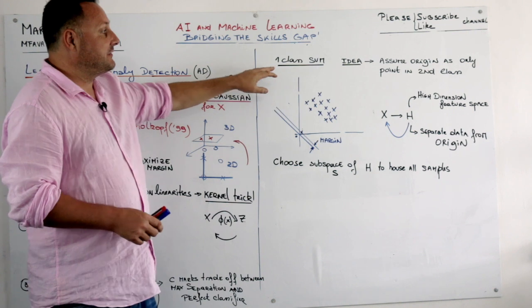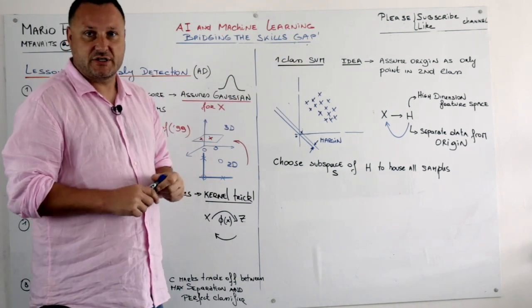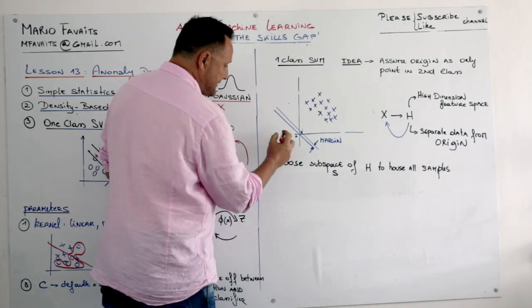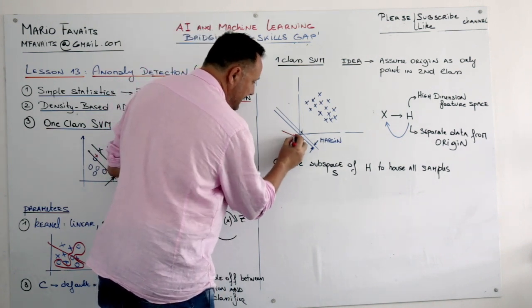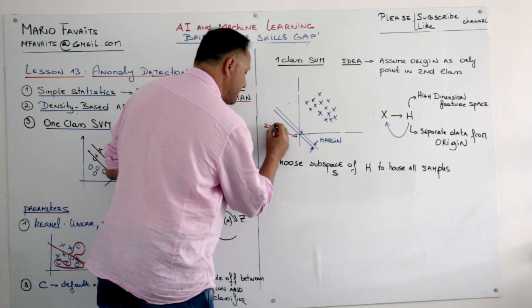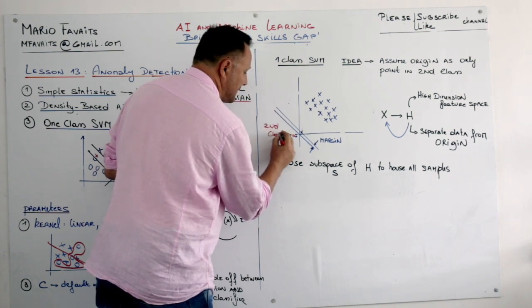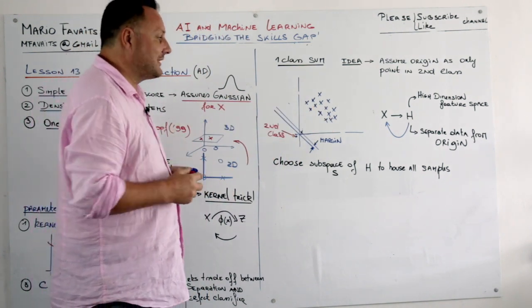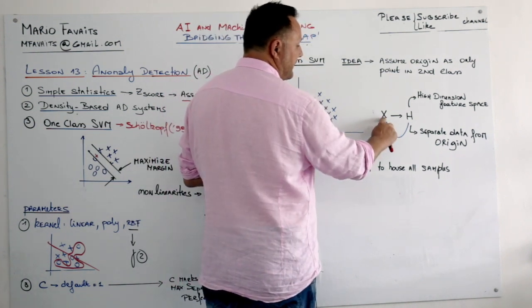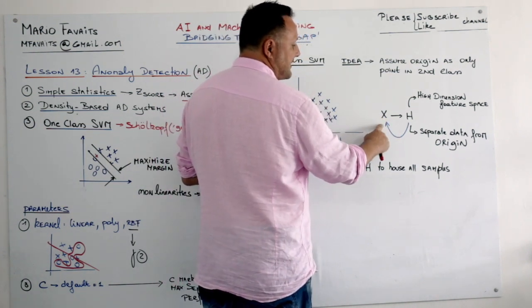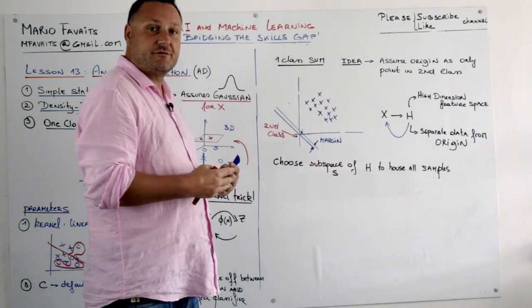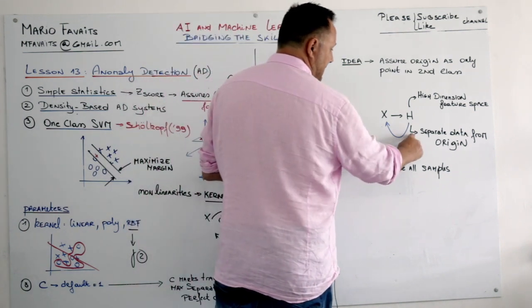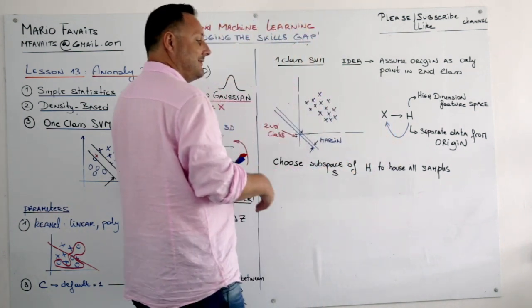Now one class SVM. Actually there is not a lot that changes. The only thing that changes is that your second class is going to be your origin. This is your second class. And all the data will be your first class. And here you do exactly the same. You take your base scenario and you project it into higher dimension feature space. You look for your support vector there. And then you come back to the original space. It is exactly the same.